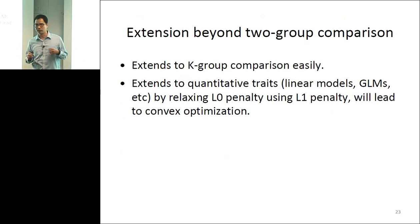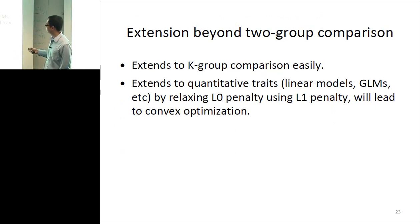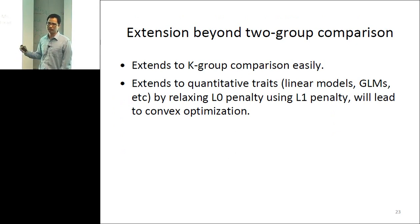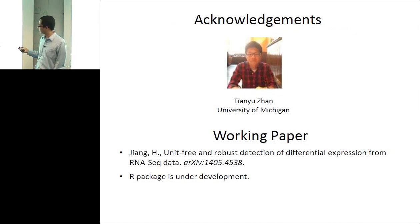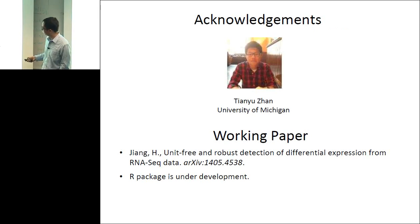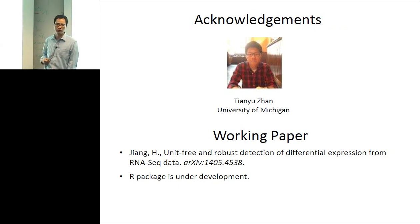This approach is for two-group comparison, but you can extend it to multiple group comparison using a linear model. For the linear model case, the optimization is very difficult. Alternatively, you can replace L0 with L1 penalty, leading to convex optimization that can be solved numerically, but it's less robust than L0. This is joint work with my student Tianyu Zhang in Biostatistics. We have a manuscript available online in the archive, and Tianyu is developing an R package. If you're interested, we can send you the source code. Thank you.